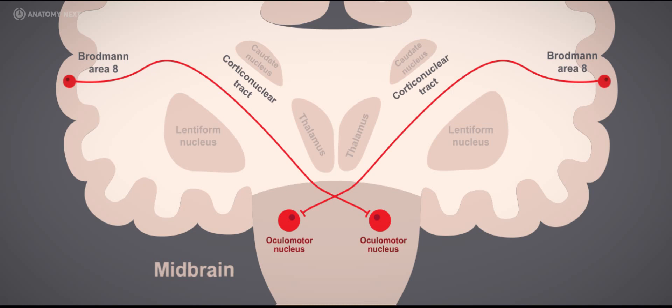The corticonuclear tract first passes through a sheet of white matter called the corona radiata. The corona radiata contains both the descending axons arising from cerebrocortical neurons, and ascending axons arising from neurons, some of which are located in the spinal cord and the thalamus, that travel respectively via the spinothalamic tract and thalamocortical tract.